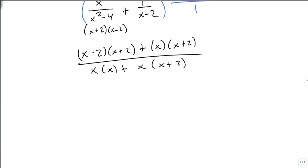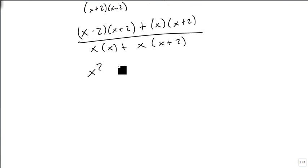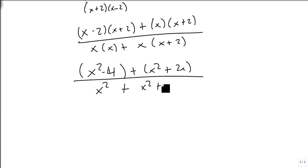So now we just take this piece and we simplify it, and we multiply it out. x squared minus 4, plus x squared plus 2x, over x squared plus x squared plus 2x.